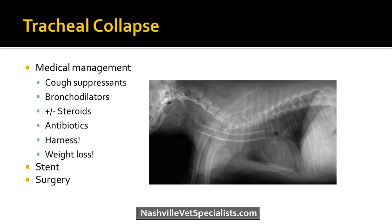Long-term medical management includes hydrocodone at home, bronchodilators, tapering steroids for severe events, antibiotics, using a harness, and weight loss. More permanent solutions include tracheal stenting and surgery — not pursued by many owners, but they can be helpful and are really the only way to open the airway back up since it's an irreversible process.